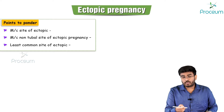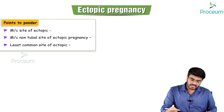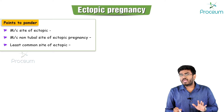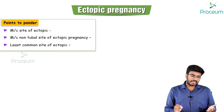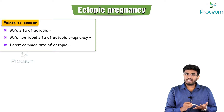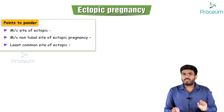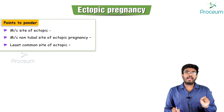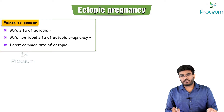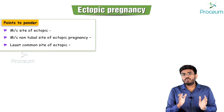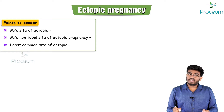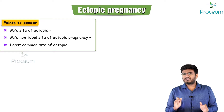The most common site of ectopic pregnancy is the fallopian tubes. Within the fallopian tube, there are different parts: interstitium, isthmus, ampulla, infundibulum, and fimbriae. The most common part to have an ectopic pregnancy is the ampullary region. Remember, the ampulla is also the most common site of fertilization.